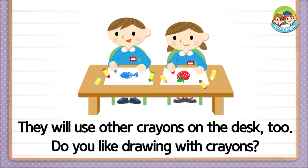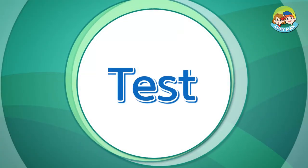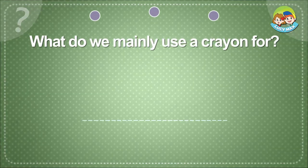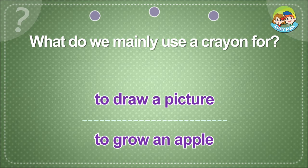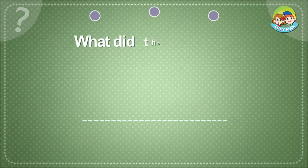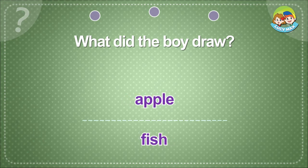Do you like drawing with crayons? What do we mainly use a crayon for? To draw a picture. To grow an apple. What did the boy draw? Apple. Fish.